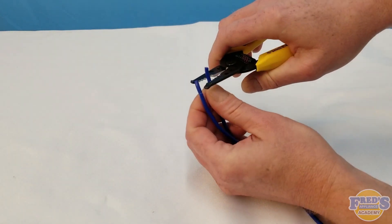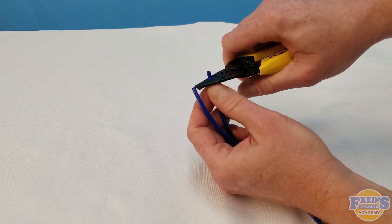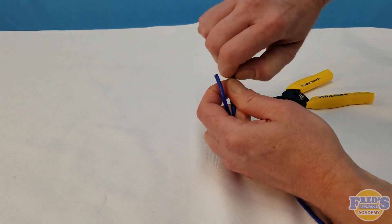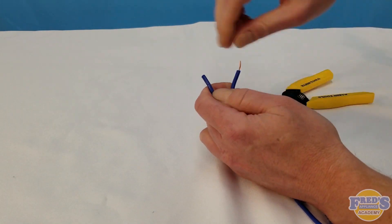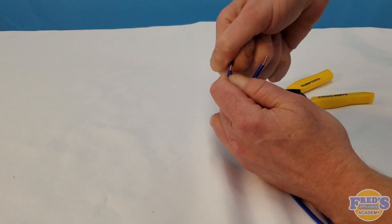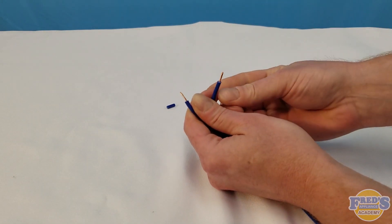After you have the alligator leads cut in half, you're going to strip back about one quarter of the insulation off the end of each wire. Here you see me twisting that off, that's a preferred technique by me and it just helps keep the copper strands together.